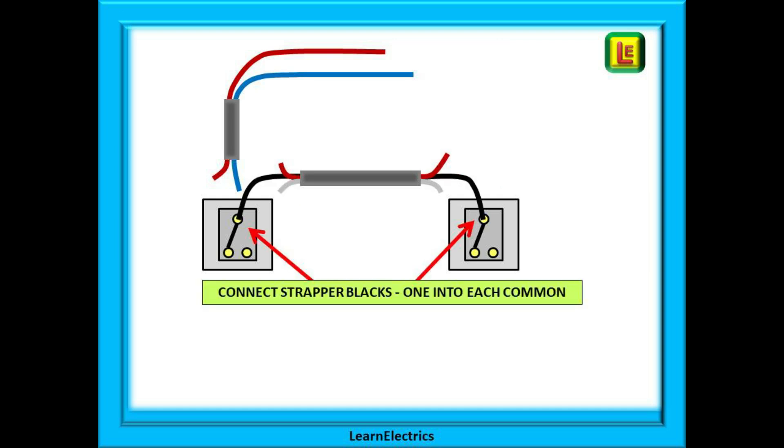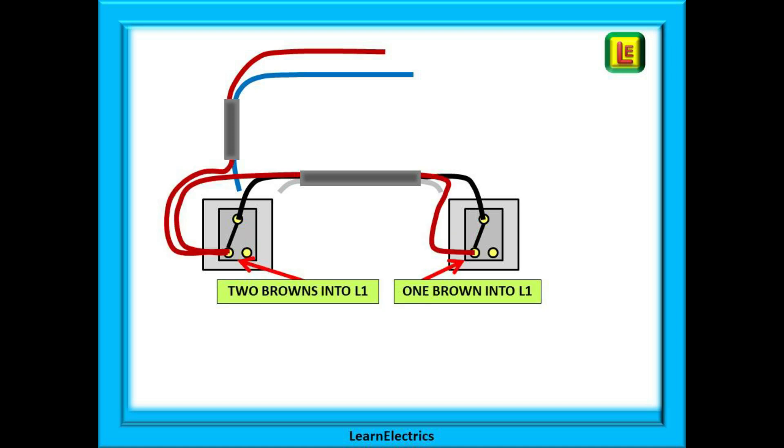Let's begin and start to build the circuit up. This is how I do it. First, connect the black of the strapper to the common terminal of both switches, not forgetting to put some brown sleeving on it. At the first switch you will have two brown wires, one from the twin and earth and the other from the strapper. Put these two browns together into terminal L1. At the second switch you have only one brown; put this into L1.